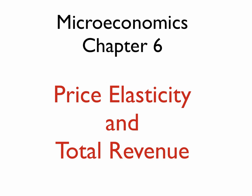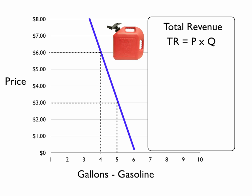In this video we want to talk about price elasticity and total revenue. Recall that total revenue is equal to price times quantity, or we abbreviate TR equal P times Q.